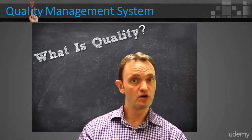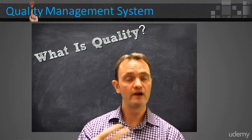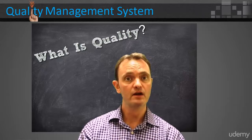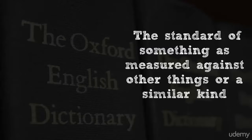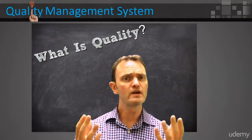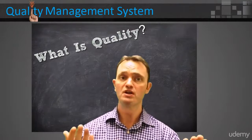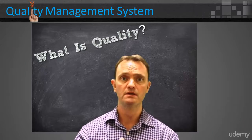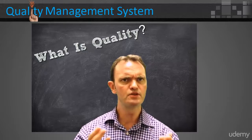The first use of the word quality can be found as early as the mid-12th century, derived from the Latin qualitatum. The Oxford English Dictionary defines quality as the standard of something as measured against other things of a similar kind. That's great — we now have a definition. Measurement sounds good, we like measurement. But 'measured against similar kind' still seems very subjective.